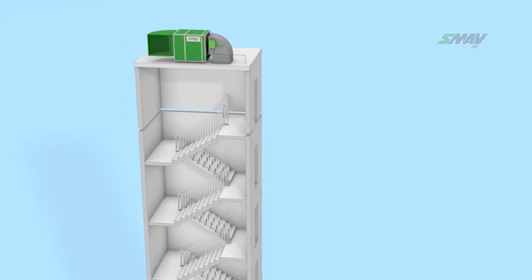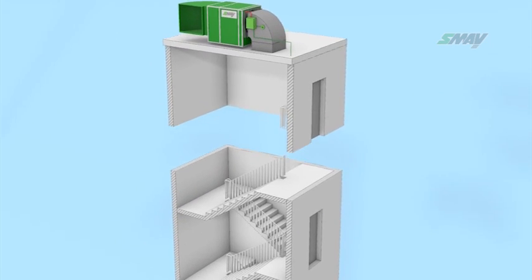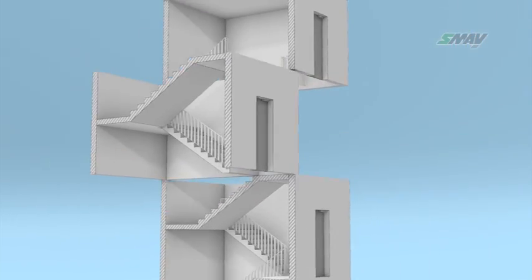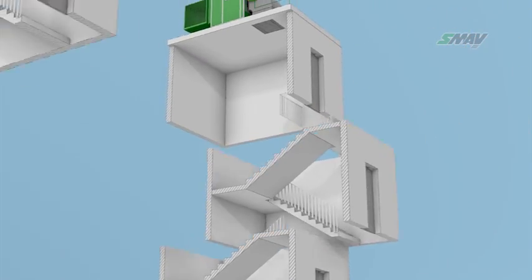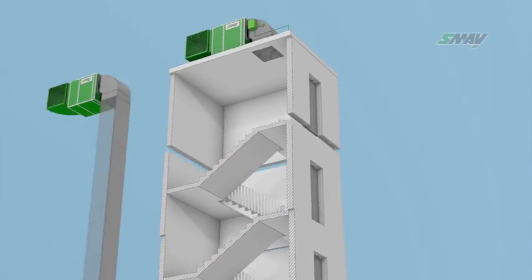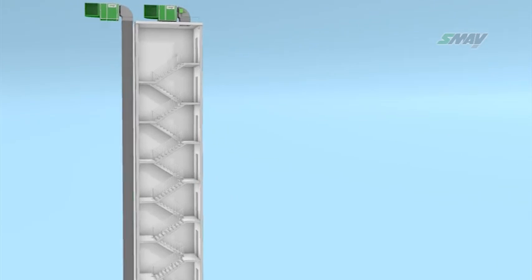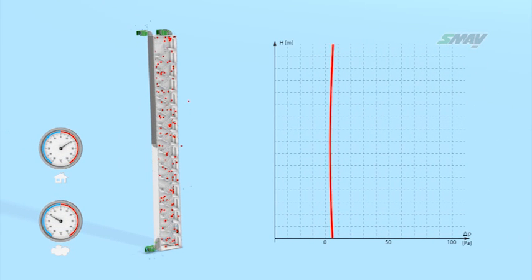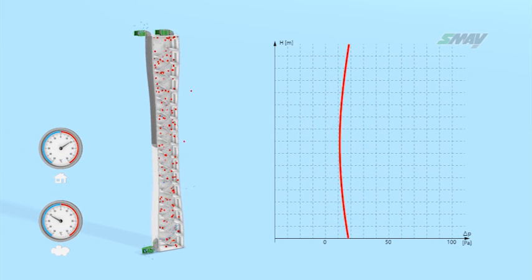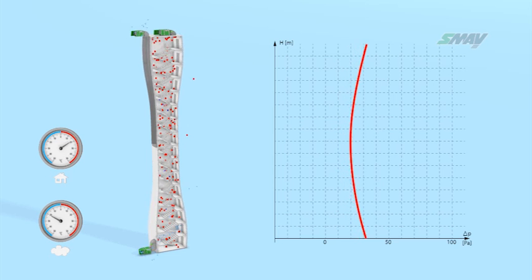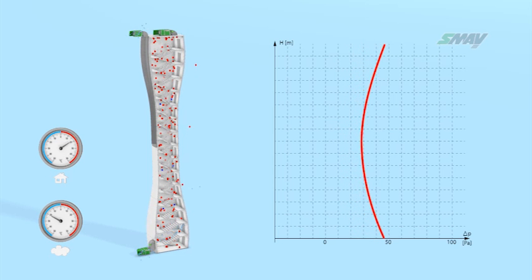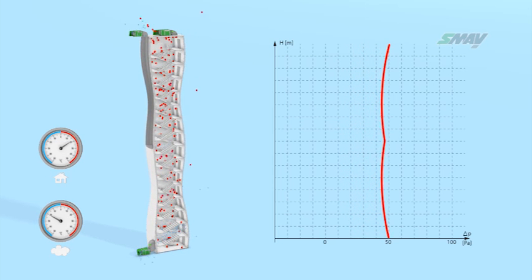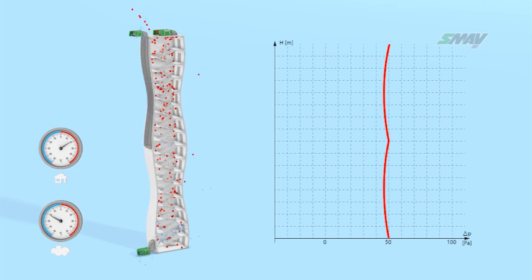For stairwells in buildings which are more than 35 meters tall, an additional air supply point is required every 10 floors. The air supply to the stairwell is activated automatically once pressure drops below a preset value, which may be caused by leaks and opened emergency exits.